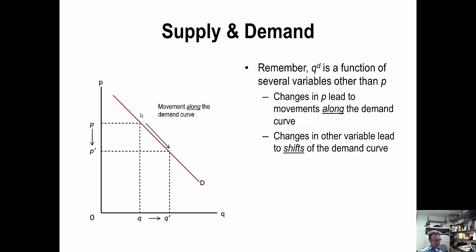Recall that quantity demanded is not just a function of price. We always have price on the y-axis, and the demand curve already embodies the relationship between price and quantity demanded. When prices decrease and quantity demanded increases — moving from P down to P prime and Q up to Q prime — that's a movement along the curve, because the curve already captures that price-quantity relationship.